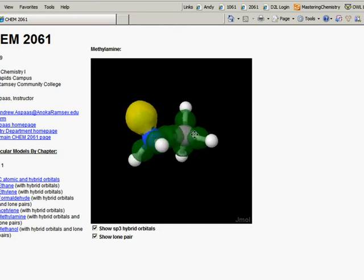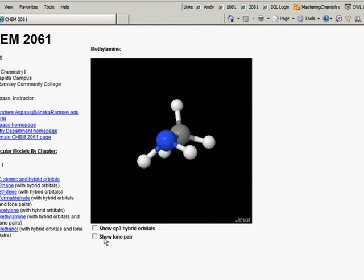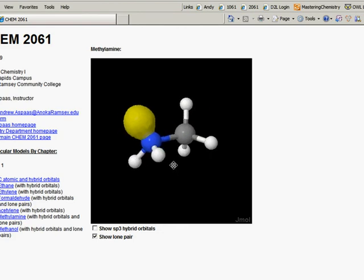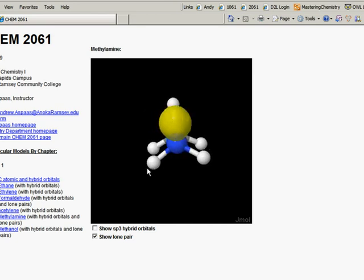Go back to my 3D model here. I'll take the hybrid orbitals away. Let's leave the lone pair there, though. The nitrogen, you can see it just like that. It looks like a pyramid if we count those bonds. The lone pair of electrons is what's pushing those bonds down out of the plane.